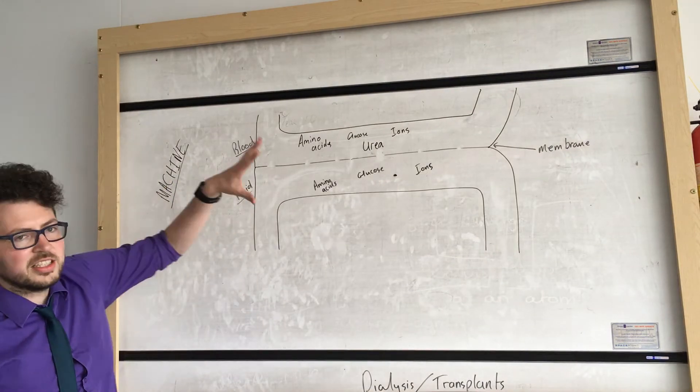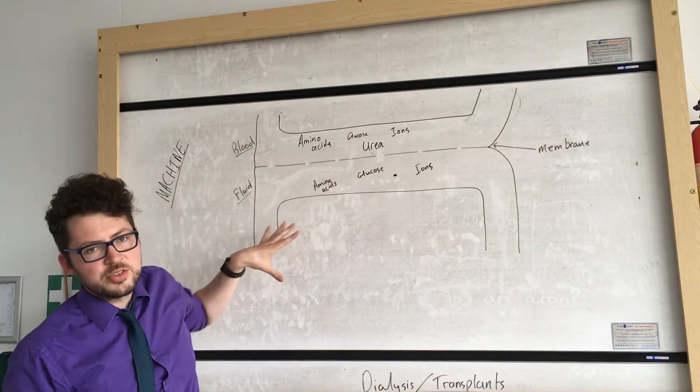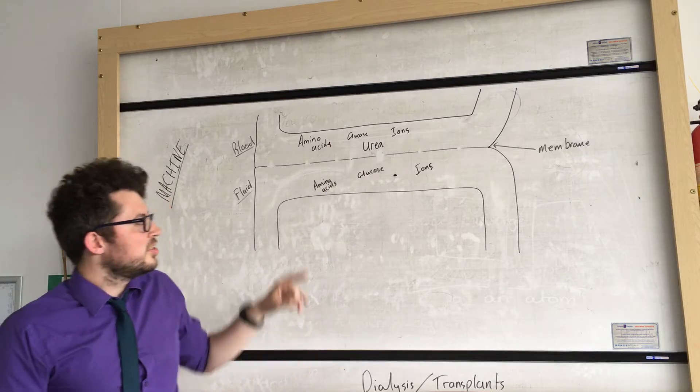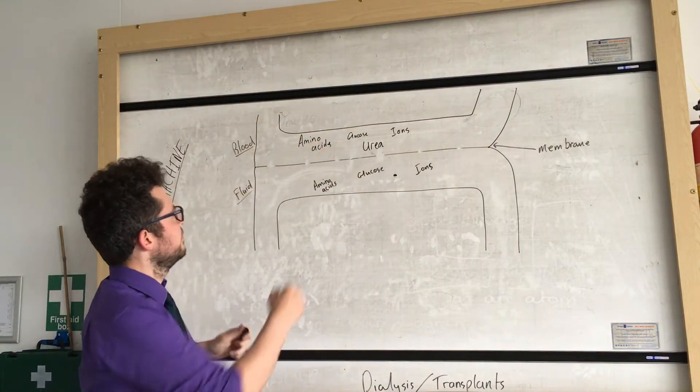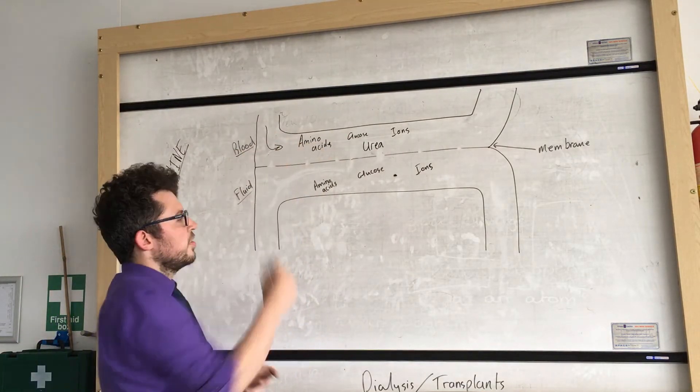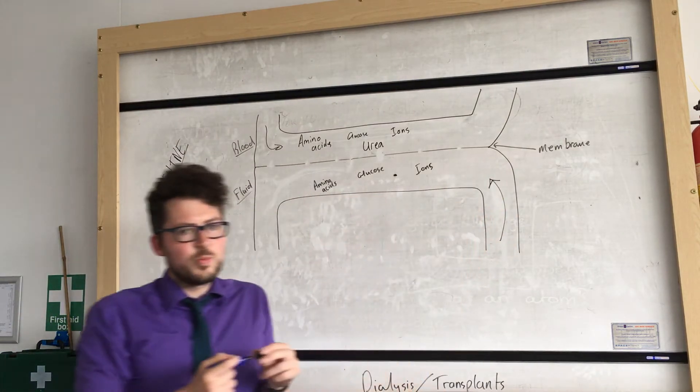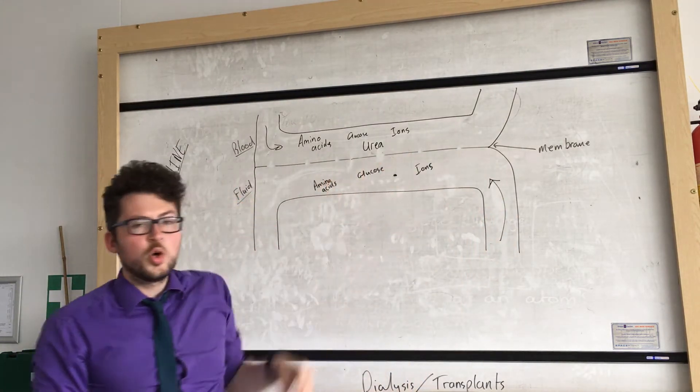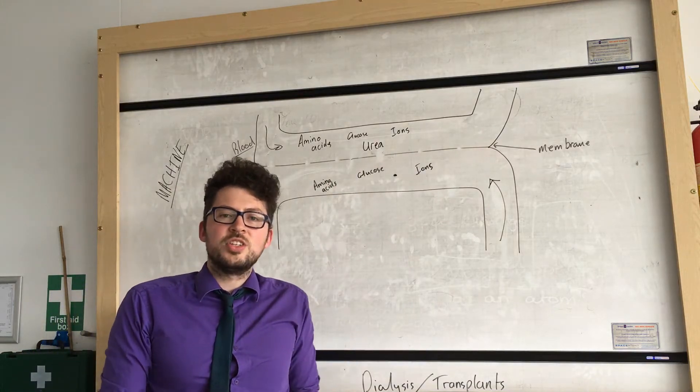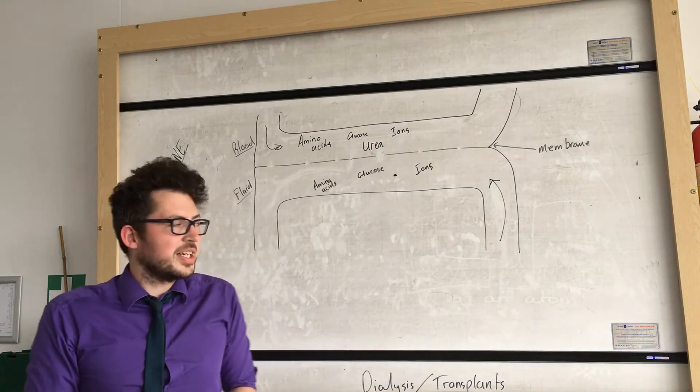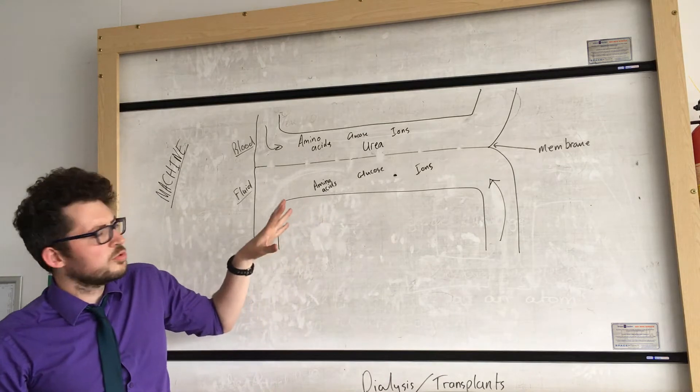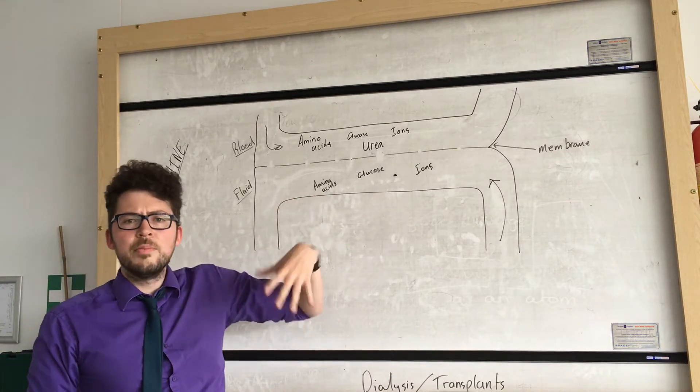We have our dialysis machine and this diagram shows what's happening within the machine. So you've got the blood flowing one way. You've got the dialysis fluid flowing the other way. And between them we have a membrane or a partially permeable membrane which allows certain materials across it. So you can see that I've drawn some materials in the blood.